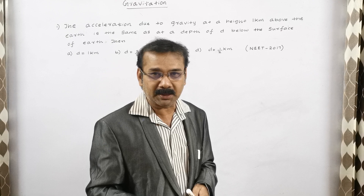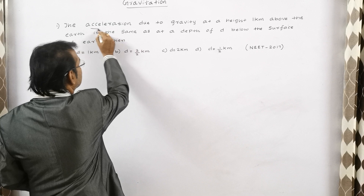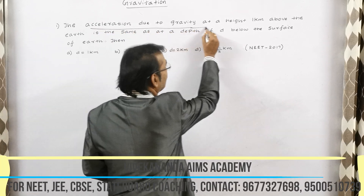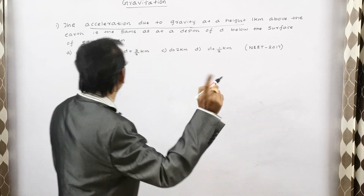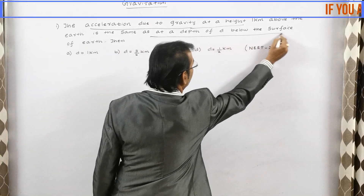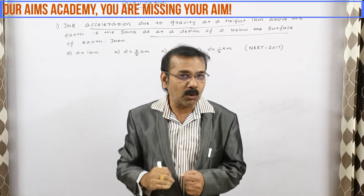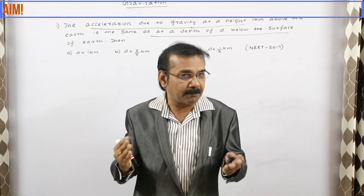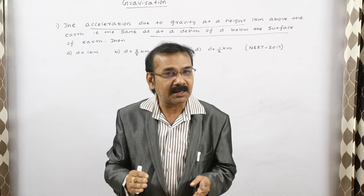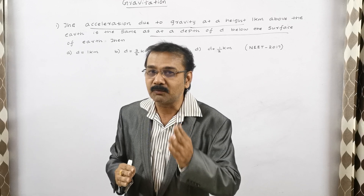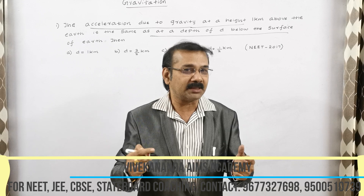Before going to the shortcut trick method, note this important point: the acceleration due to gravity at a height, and at a depth of d below the surface — one condition is above the surface, the other is below the surface, that is for depth. So there are two important lines here. If you identify these two important lines, it is very easy to find the value of d within a fraction of a second.